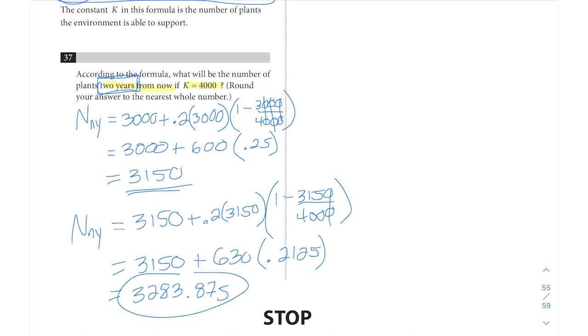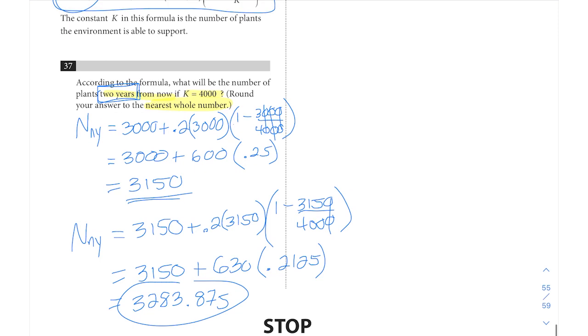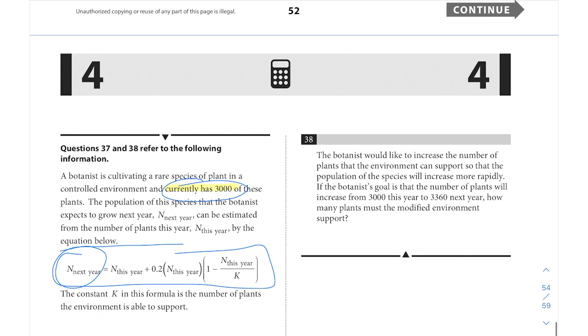That's an exact value, but remember, it says round your answer to the nearest whole number. So here this is going to round up, which means that from this exact value, we're going to plug in 3,284 into our grid-in. And that's the correct answer for 37.